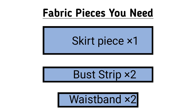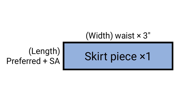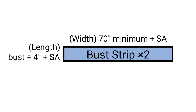We basically need rectangle pieces to put this dress together — it is that simple. The first rectangle to cut out is for your skirt piece. You want to cut one rectangle: the width should be your waist circumference times three, and the length should be your preferred skirt length plus half an inch for joining to the waistband and one inch for hemming the skirt — that is about 1.5 inches total.